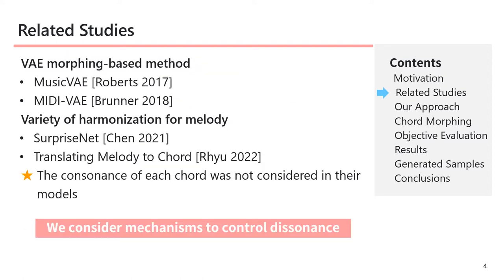Now I'll talk about related studies. There are some VAE morphing-based methods such as MusicVAE and MIDI VAE. Several approaches have been proposed for variety of harmonization for melody, such as SurpriseNet and translating melody to chord. However, in these studies, the consonance of each chord was not considered in their models. So we consider a mechanism to control dissonance.